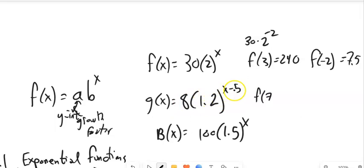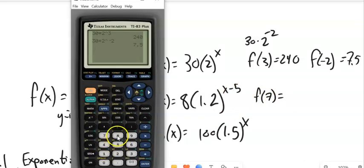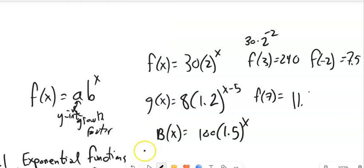I could evaluate f of negative 2. Notice what this is: 30, but then I'm dividing by 2 two times, multiplying by half two times. And again I can do that. 30 times 2 to the power of negative 2, I get 7.5.